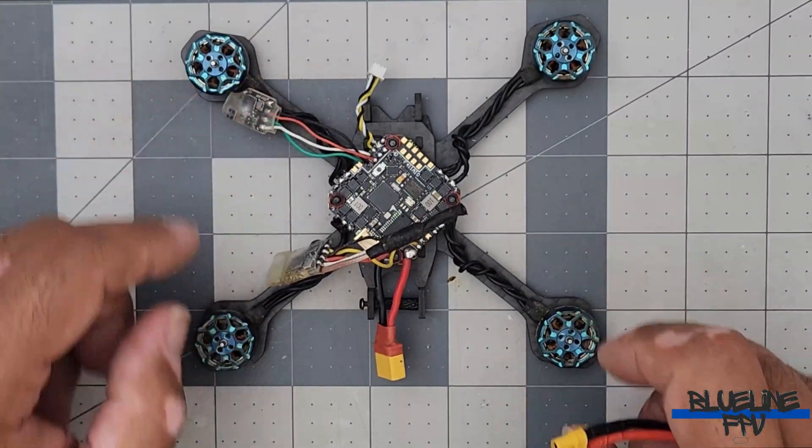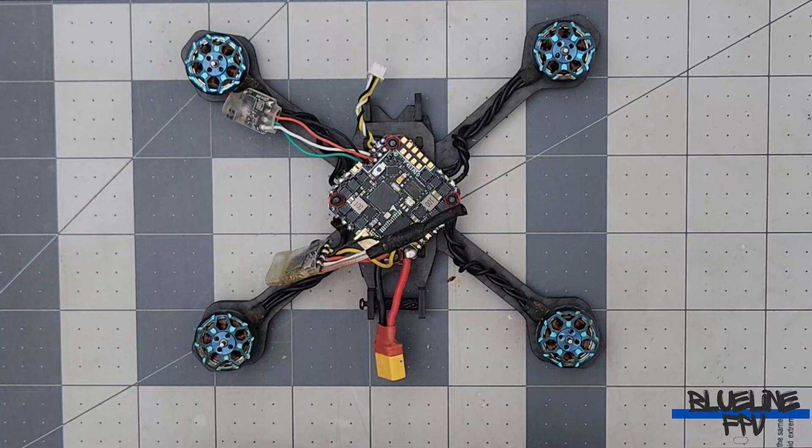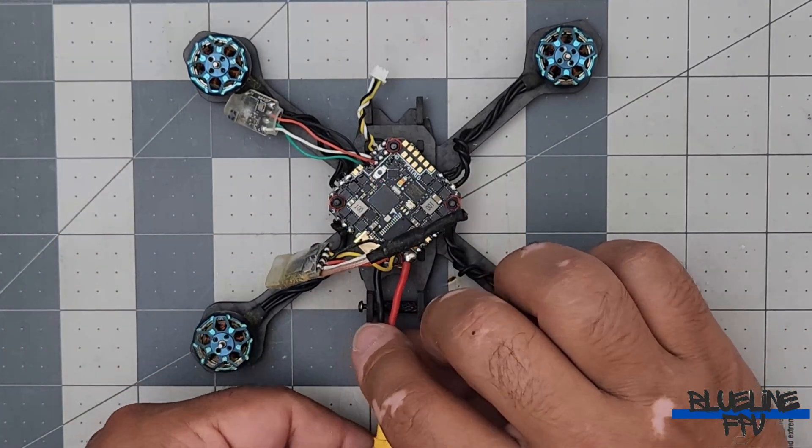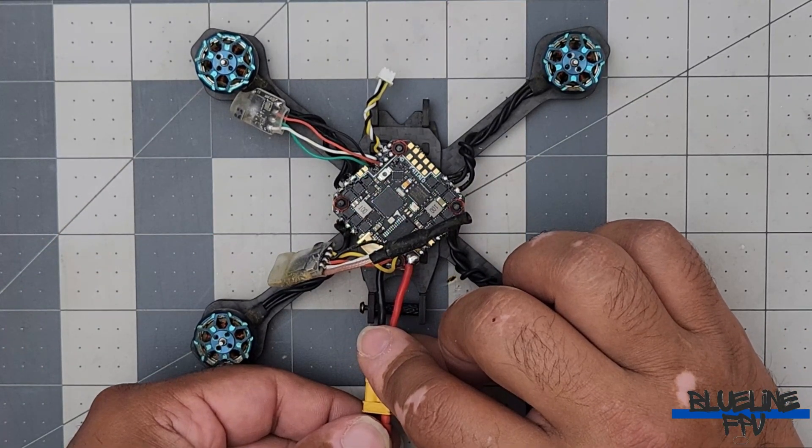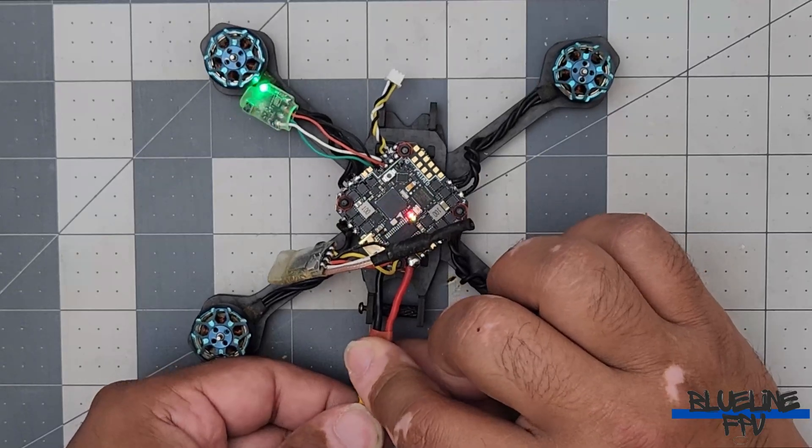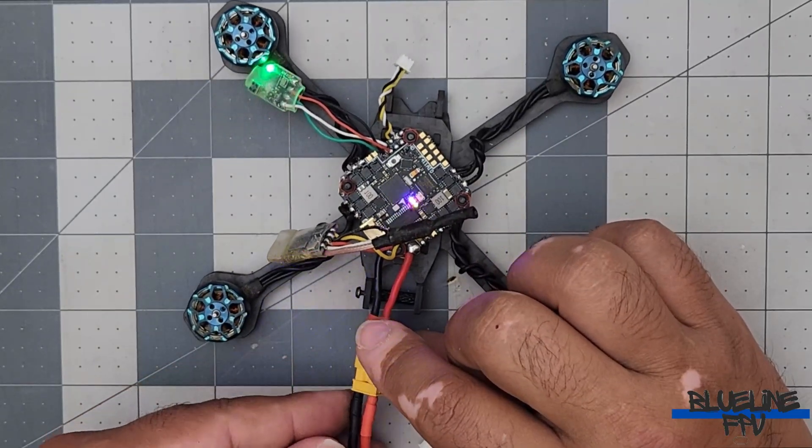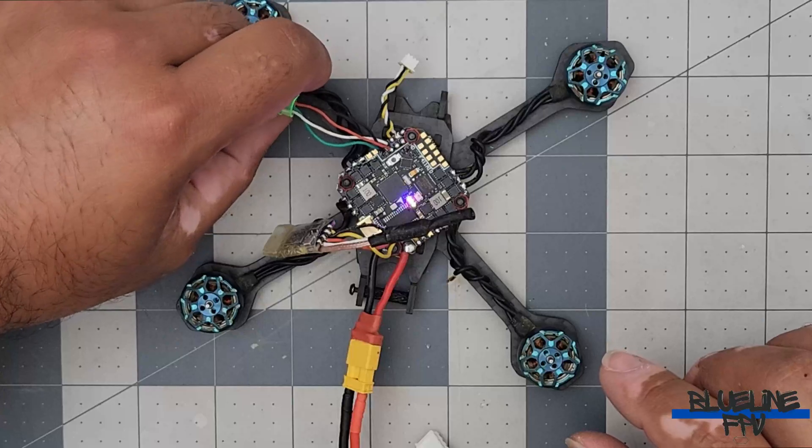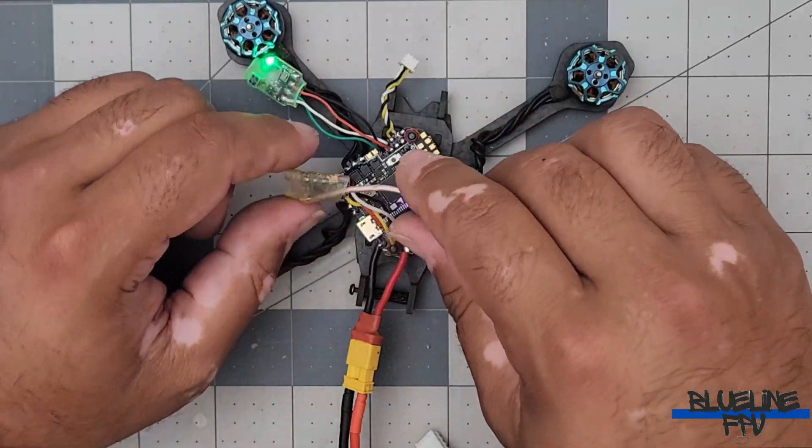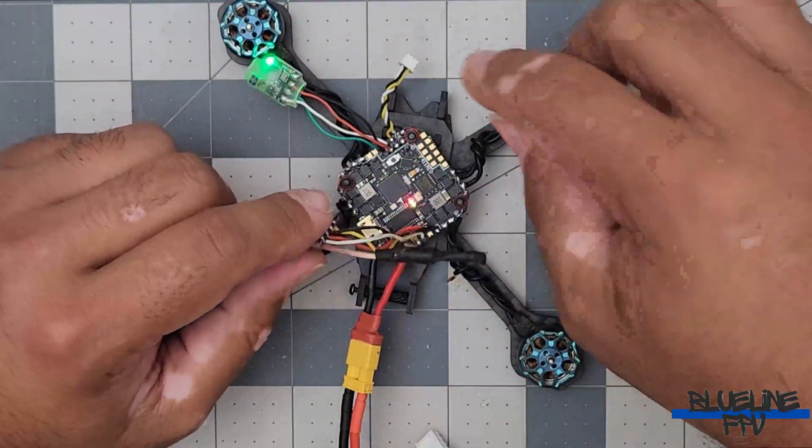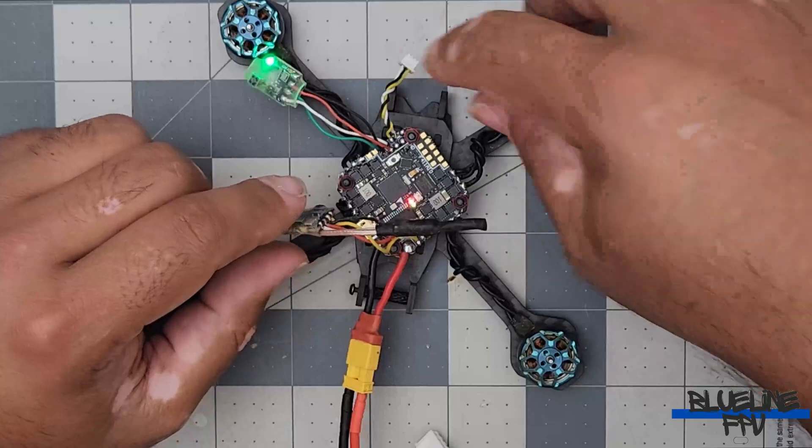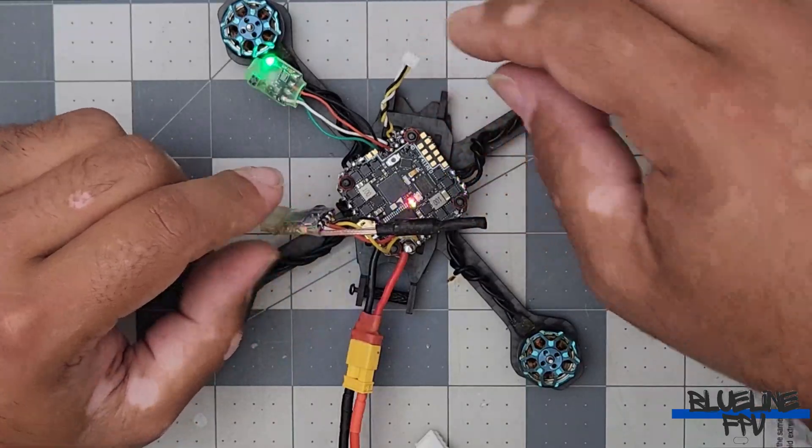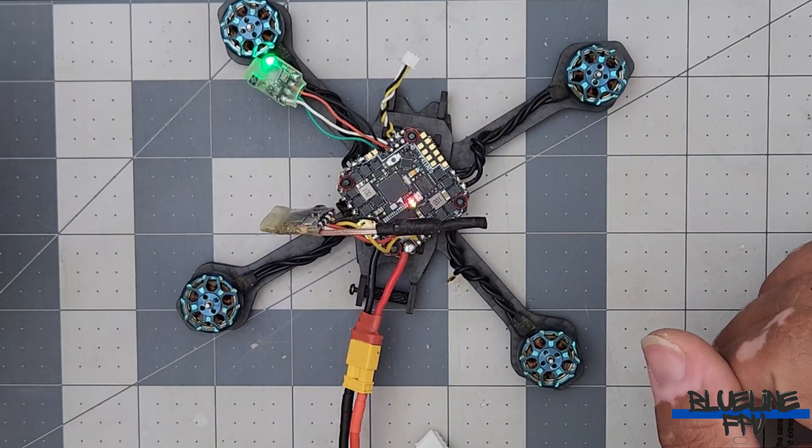All right, so since we have everything connected, let's go ahead and do a power up and see if all of our components are working. All right, we got a green light on the receiver. Our VTX has lights. So that's working. And our camera is plugged in right here. But it's not quite connected. So yeah, everything appears to be working.